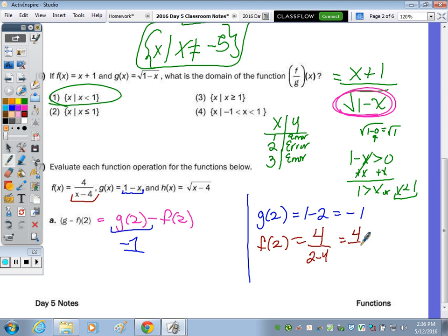Now I'm going to find F of 2. So F of 2 equals, that's this function here, 4 divided by 2 minus 4. So 4, 2 minus 4 is negative 2. 4 divided by negative 2 is negative 2. So I need to subtract, don't forget that minus, but then I'm going to subtract a negative, which turns into a positive. So negative 1 plus 2 is 1.